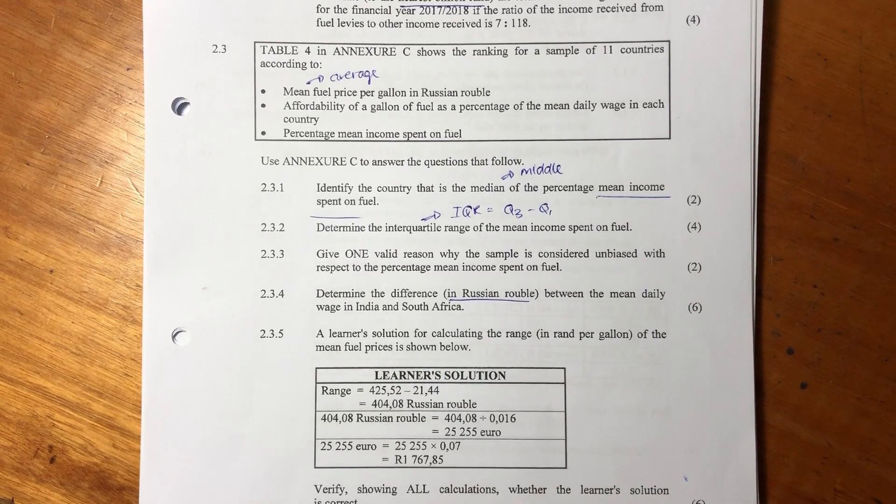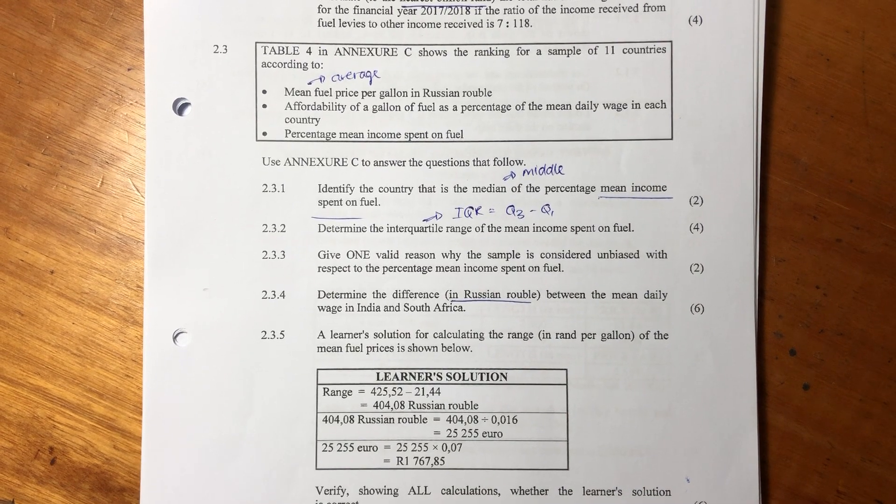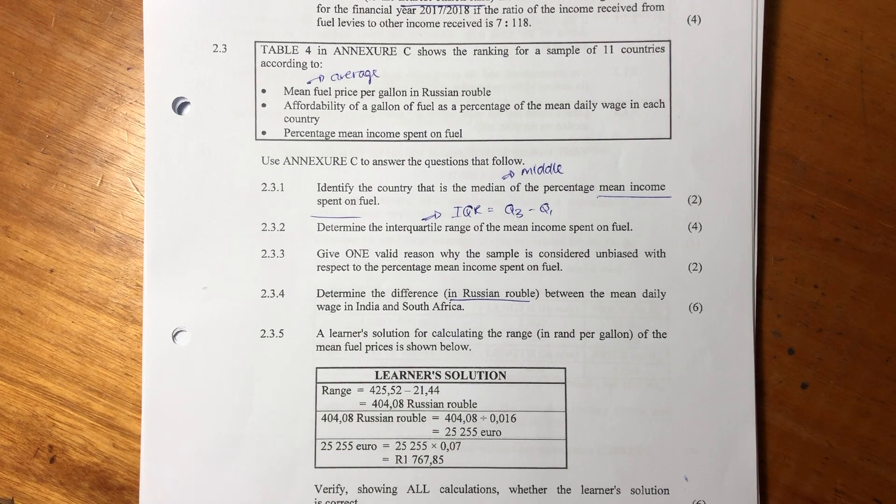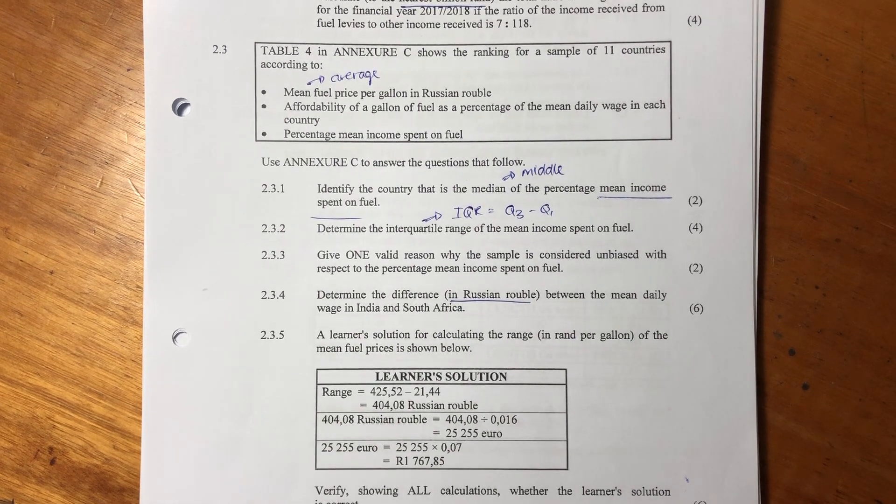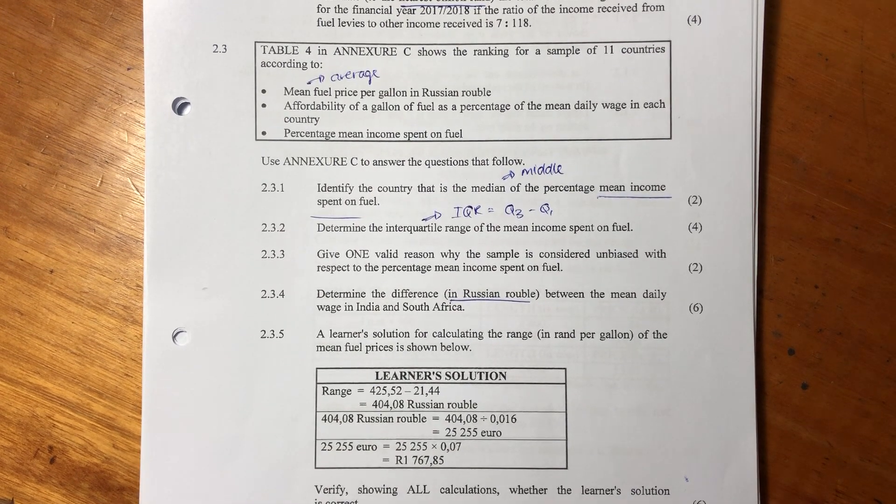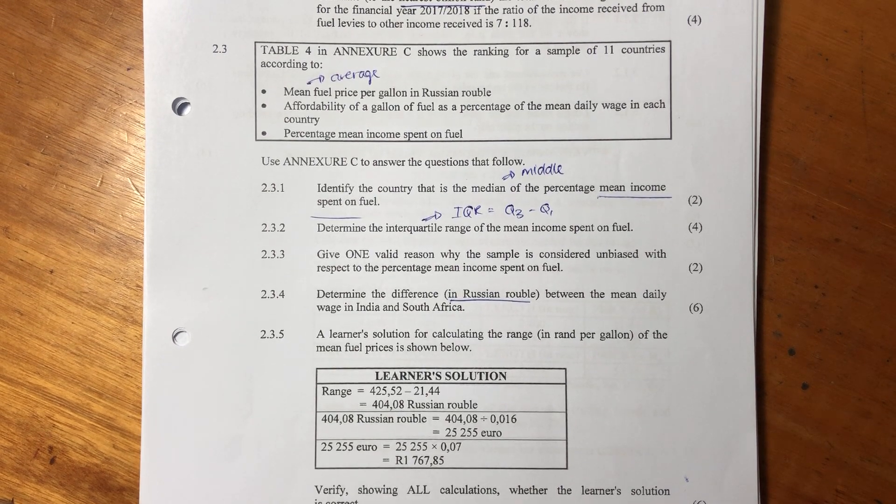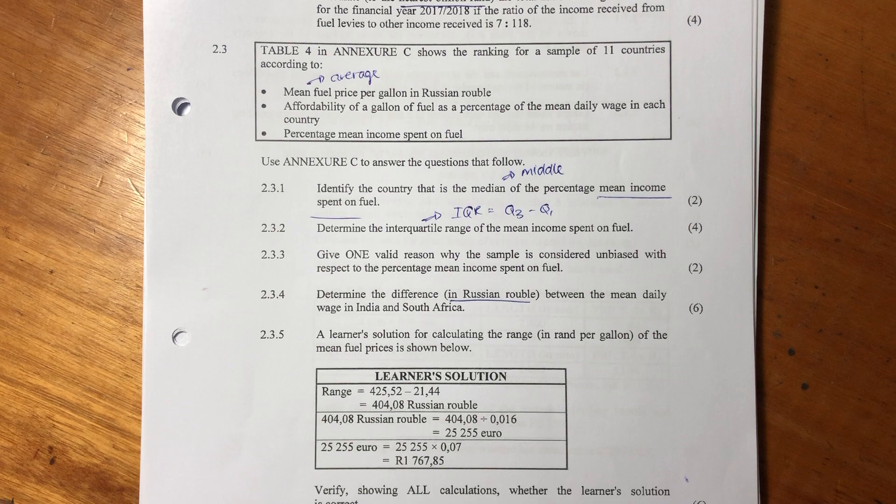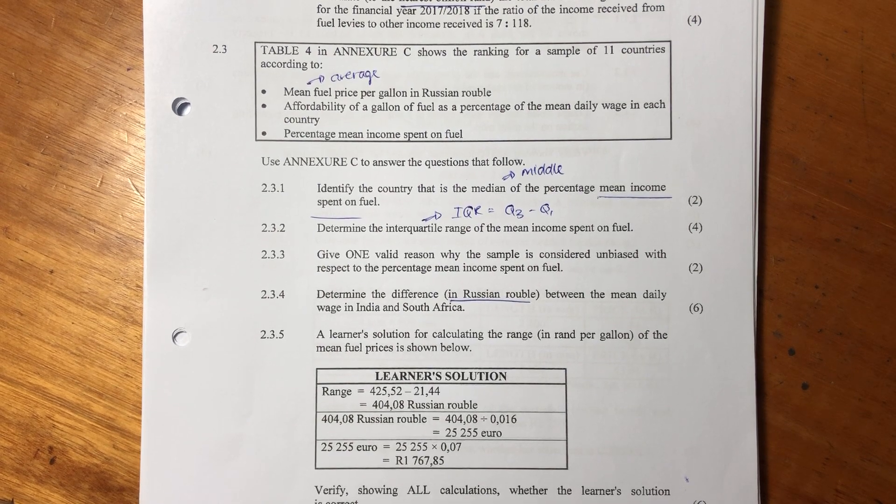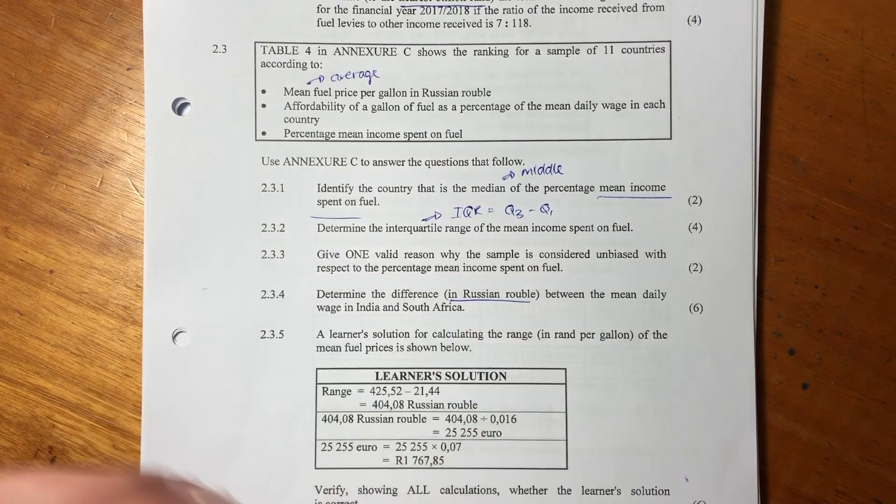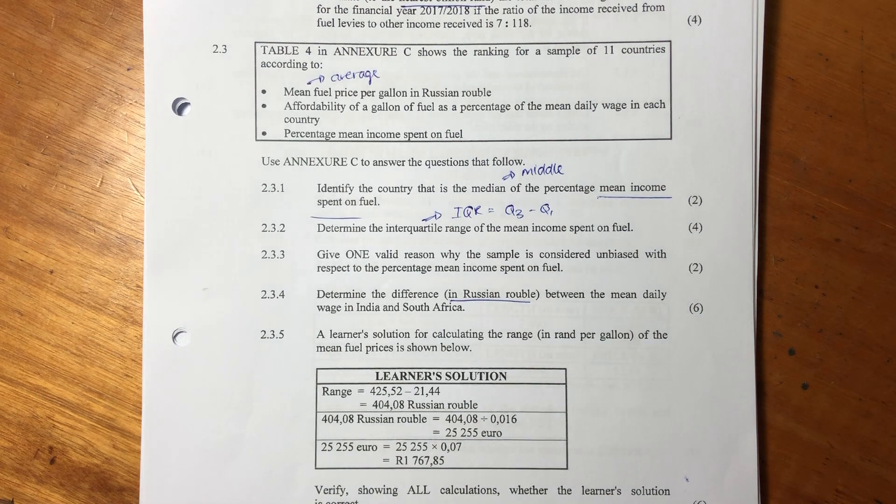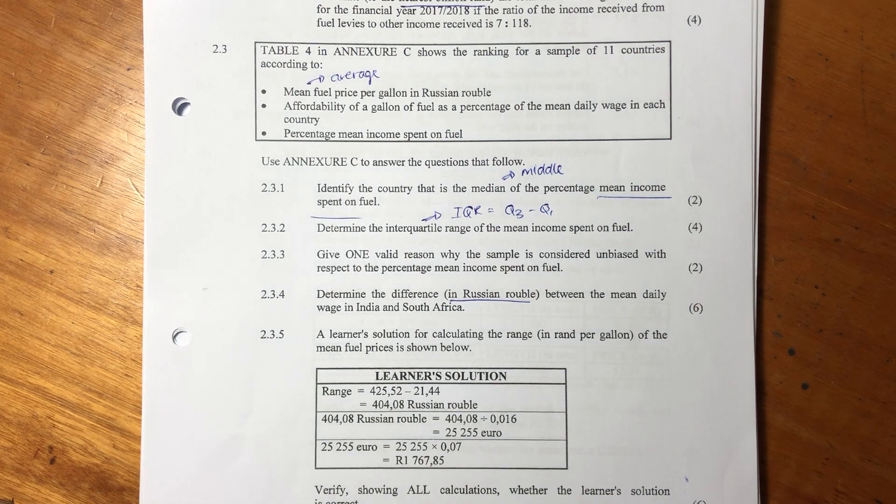Hey guys, so we're looking at 2.3 now. 2.3 is a data handling question and there's some exchange rate questions in here as well. This table 4 in Annex C shows the ranking for a sample of 11 countries according to the mean fuel price per gallon in Russian ruble, the affordability of a gallon of fuel as a percentage of the mean daily wage in each country, and the percentage mean income spent on fuel.